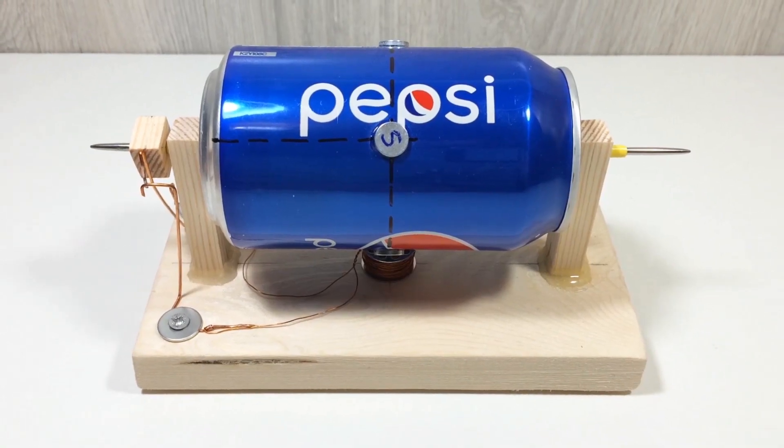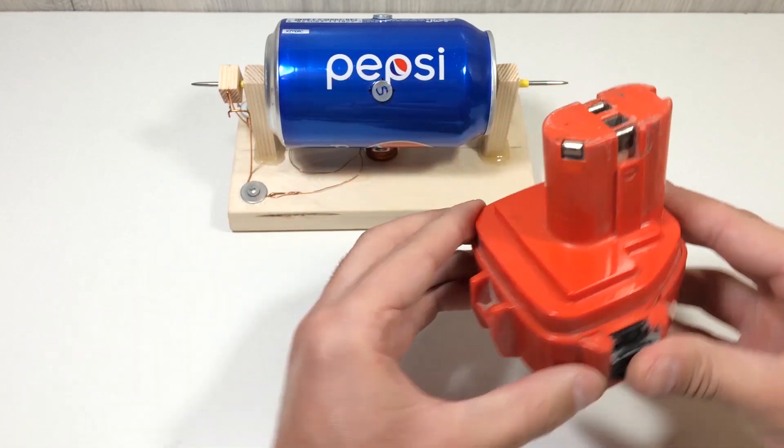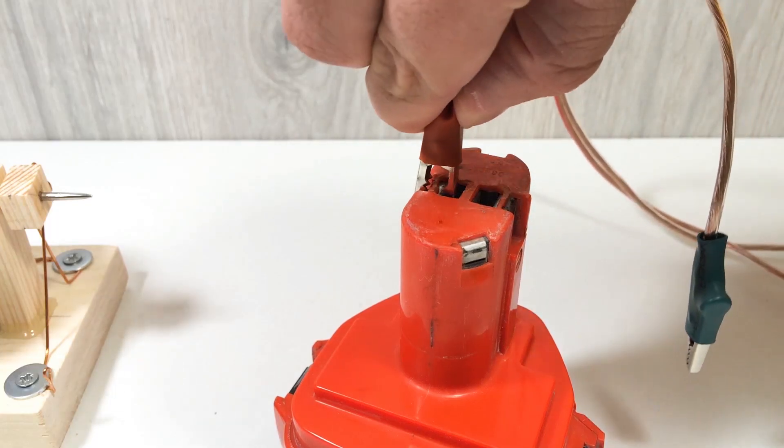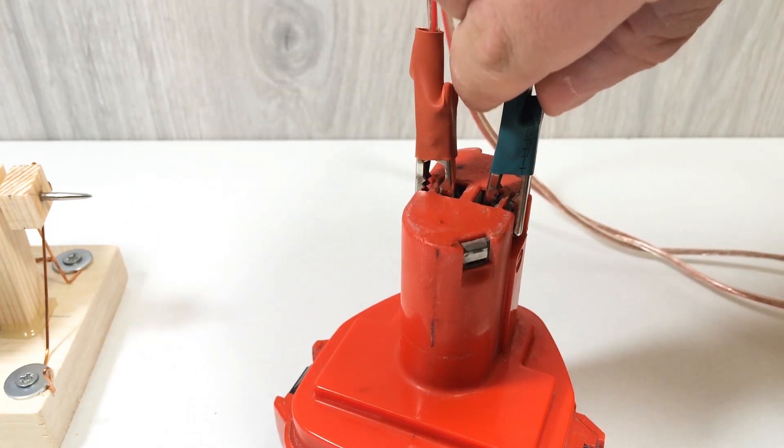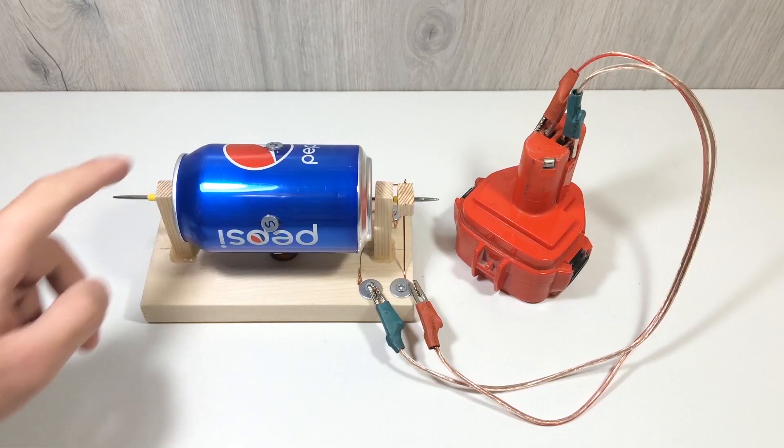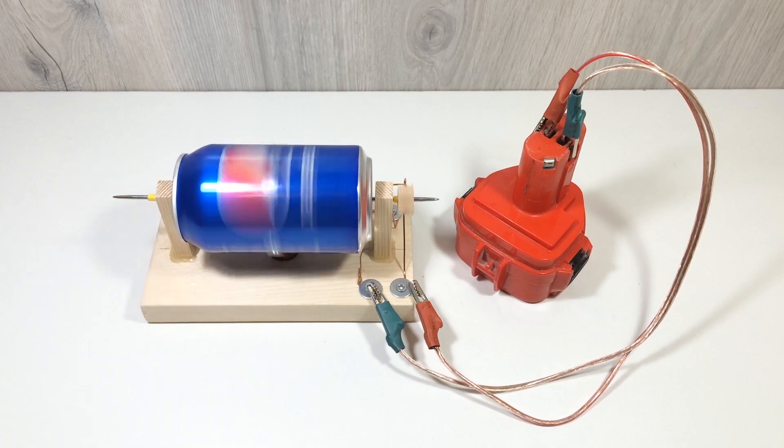Time for the test run. Connect the setup to a 9-volt battery, or for more power, use a 12-volt drill battery. As soon as you connect the power, the can starts to spin. The magnets on the rotor interact with the coil's magnetic field, and the breaker keeps switching the current at just the right time.